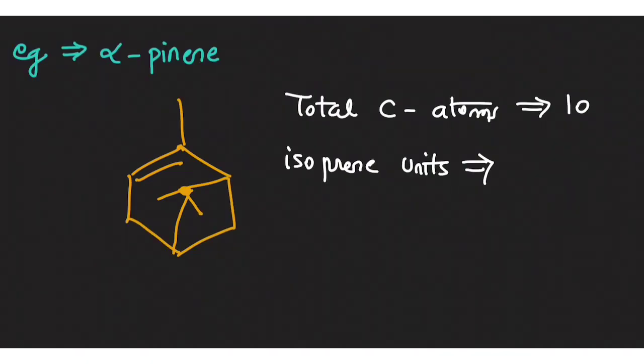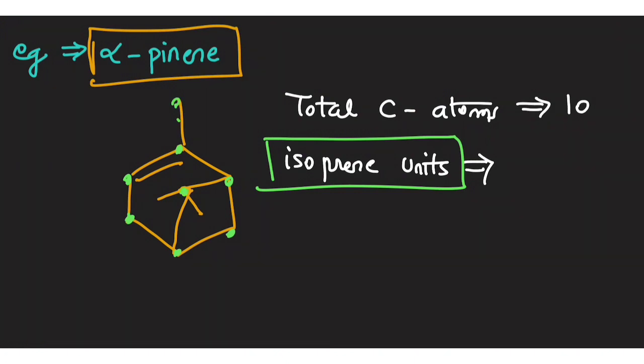So now example, this compound is known as alpha pinene. So if we have to calculate number of isoprene units in this compound, so first let's count the total number of carbon atoms. One, two, three, four, five, six, seven, eight, nine, and ten. Total number of carbon atoms are ten and therefore the isoprene units will be ten divided by five equals two. So there are two isoprene units in the alpha pinene. I hope this is very clear to you.